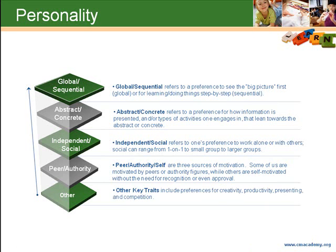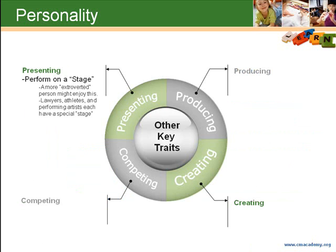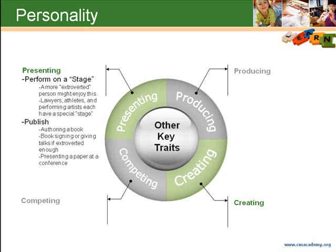Other key traits include preferences for creativity, productivity, presenting, and competition. Presenting can come in many forms, and what you prefer depends on other aspects of your personality. One way to present is to perform on a stage, whether that is a literal stage or some other forum with an audience, such as a lawyer in a courtroom. Another way to present is to author a book or article, and perhaps, if one is extroverted enough, to give a book signing or to present that article at a conference.